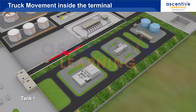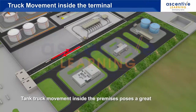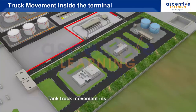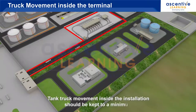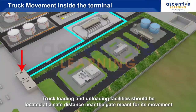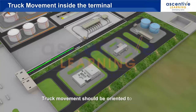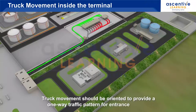Tank truck movement inside the premises poses a greater risk and can be a potential source of ignition. Hence, tank truck movement inside the installation should be kept to a minimum. Truck movement should be oriented to provide a one-way traffic pattern for entrance and exit.